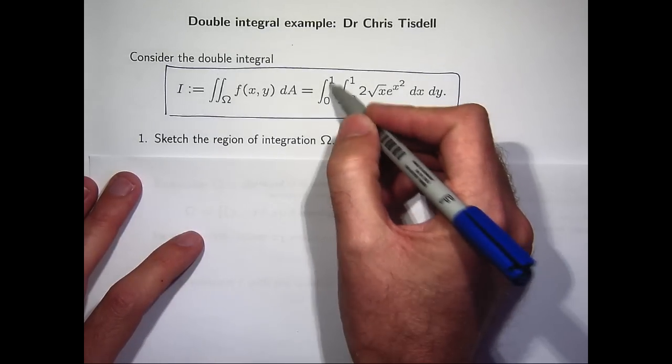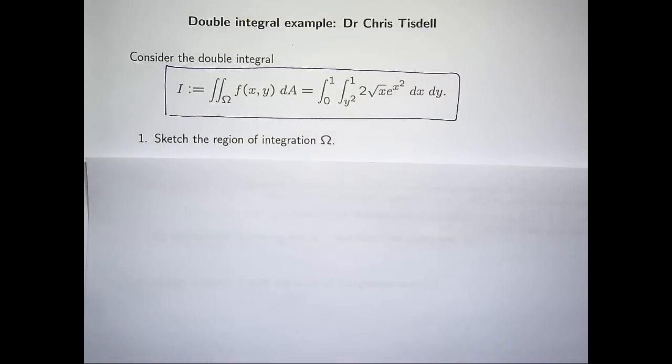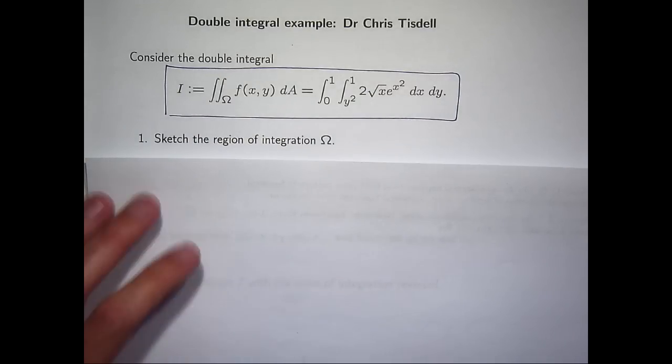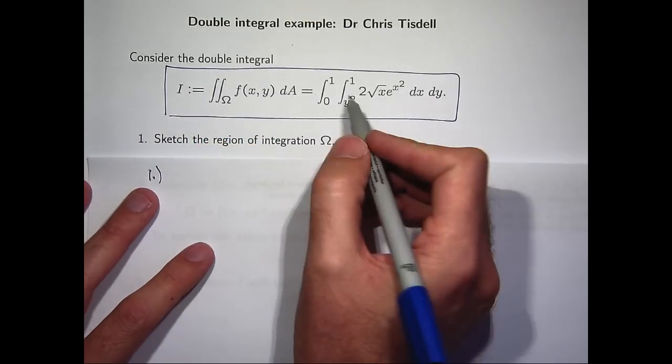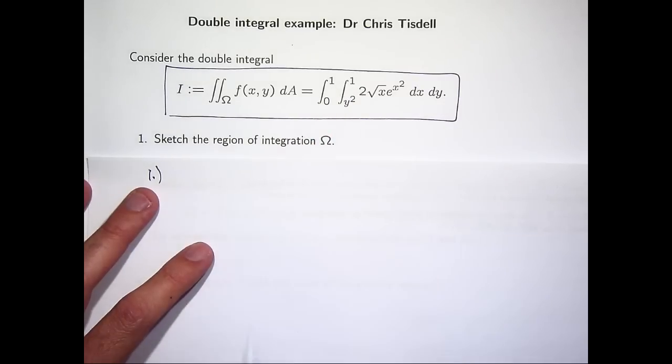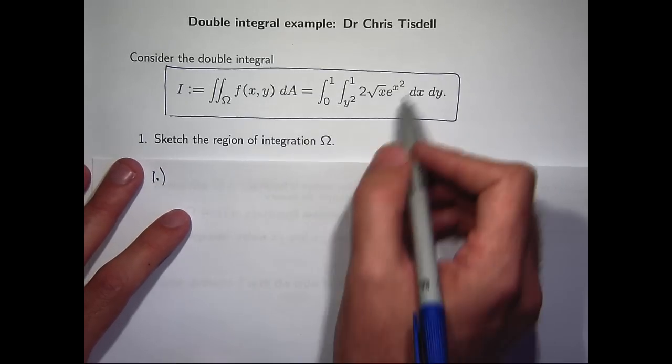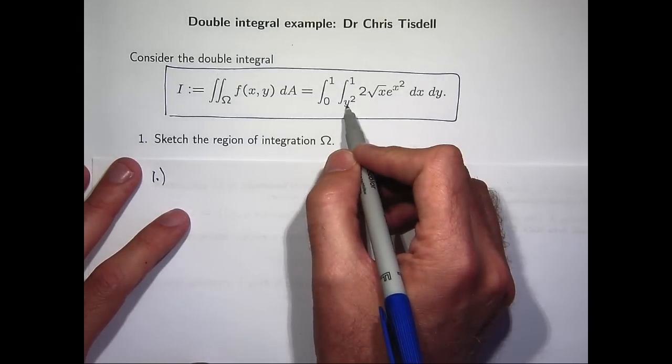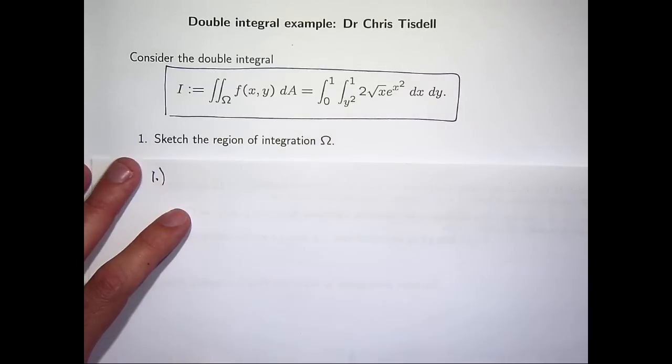The region of integration has these sort of functions as bounding curves to the region of integration. So what I like to do is just sketch the curves associated with these limits of integration and derive the omega from that. So x is between y squared and 1, and y is between 0 and 1.